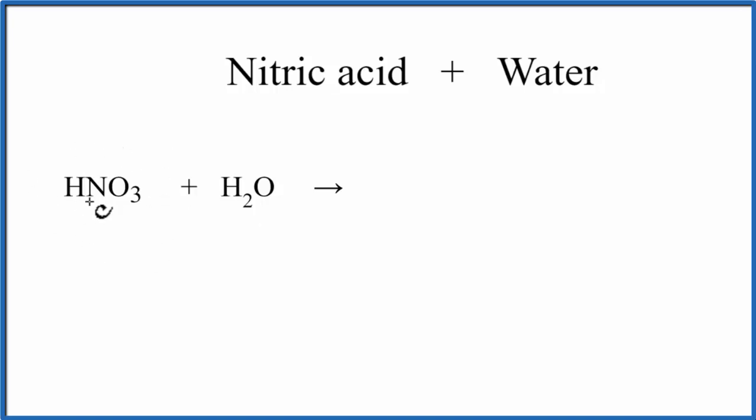When we look at HNO3, the H here is what makes it an acid. Think pH. This H is like the H in pH, and pH tells us about acidity.